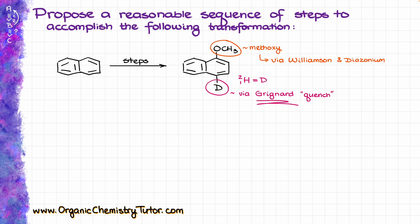Since the Grignard reagent does not tolerate any strongly acidic conditions, or anything that can be even a little bit acidic like an alcohol or a phenol, we need to make sure that we put our methoxy group on first, and then incorporate the Grignard reagent into our scheme and finish up the synthesis. Additionally, it's important to remember that in aromatic chemistry, we always think about the directing effects of groups already on the ring.